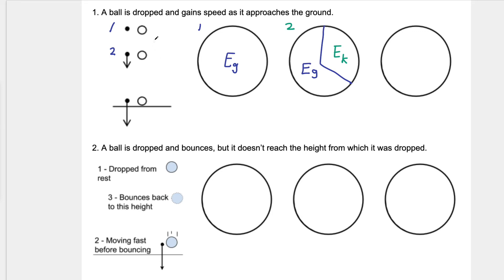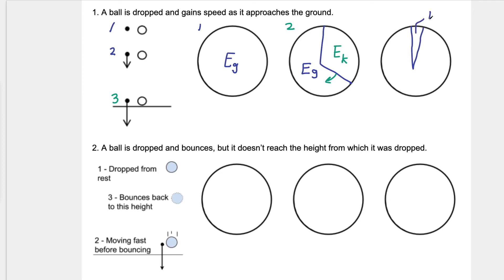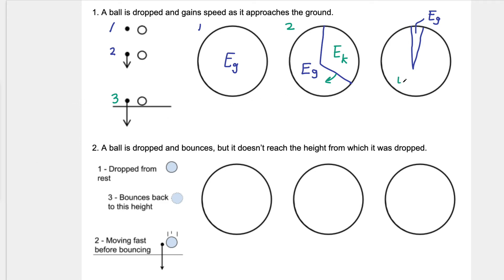At position two I would have some remaining gravitational potential energy and some kinetic energy. As time moves on and the ball falls closer, the kinetic energy piece would be getting bigger and bigger. For position three, just before the object hits the ground, if there's any gravitational potential energy at all it is just a tiny sliver, and almost all of the energy has now been converted over to kinetic energy, E_K.